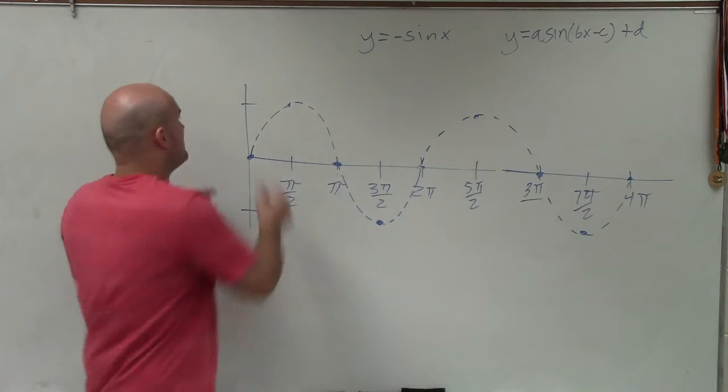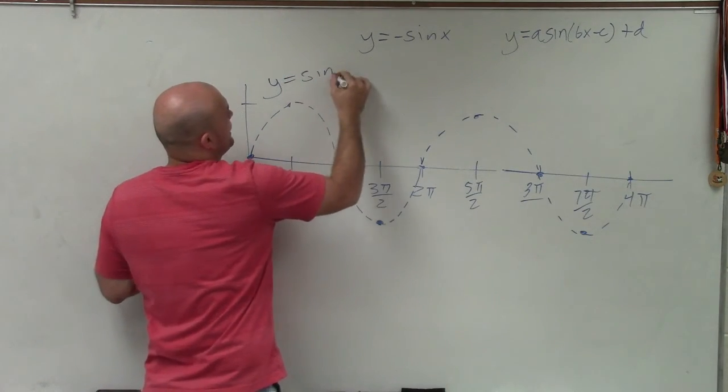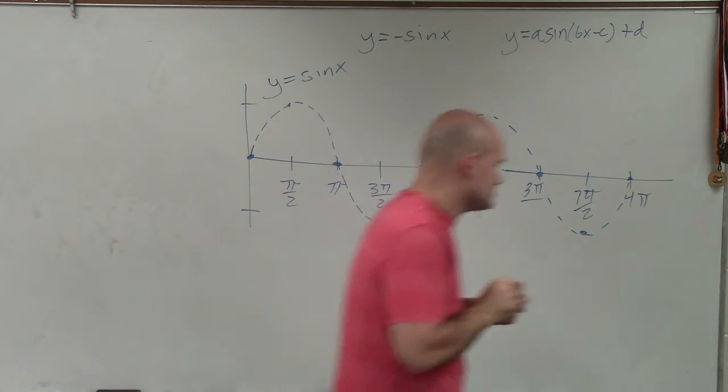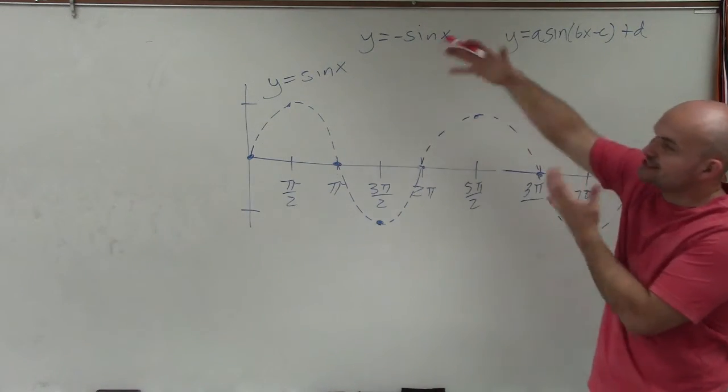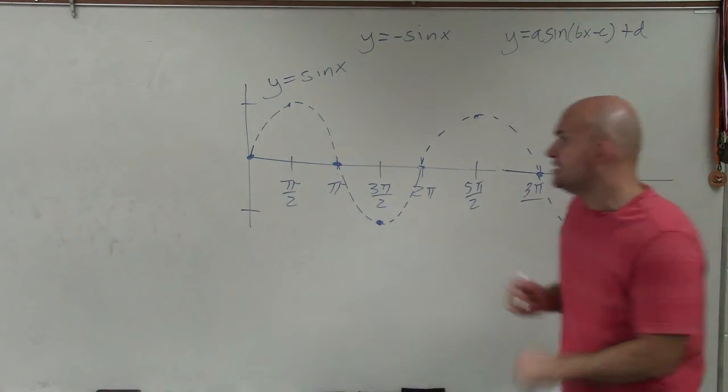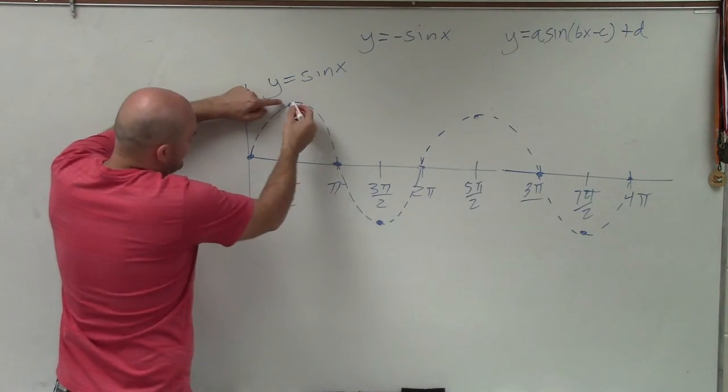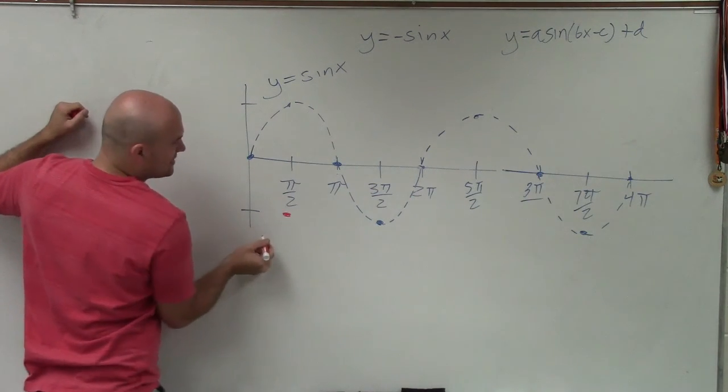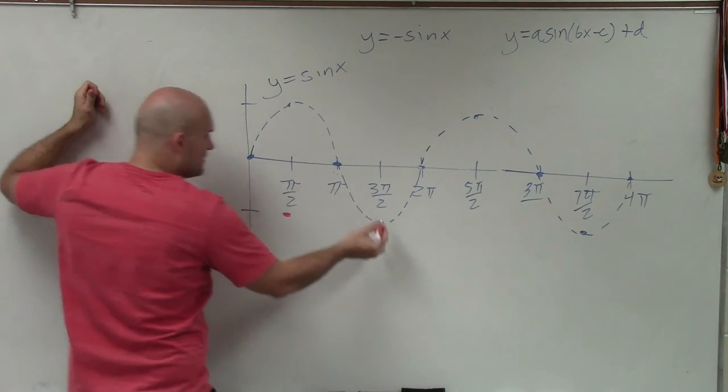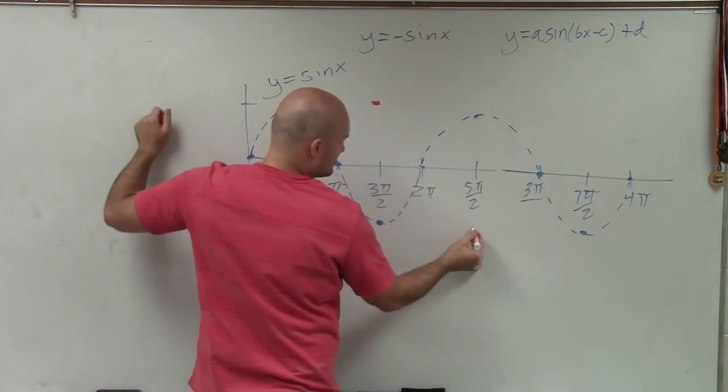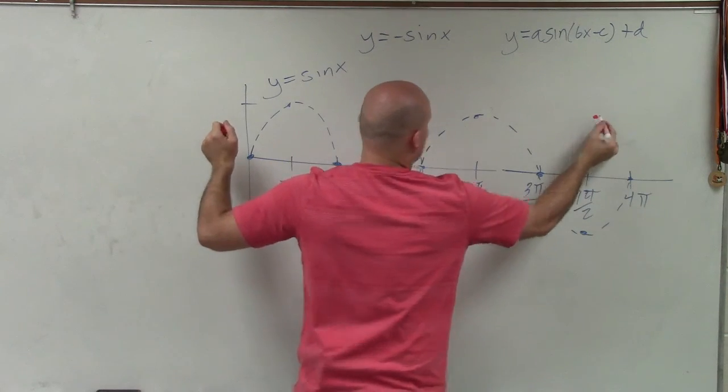So that is the parent graph, y equals sine of x. But we need to graph y equals negative sine of x. And all we're doing is just reflecting this graph over the x-axis. So any point that I have above the x-axis is now going to be below the x-axis. I can't reflect the point that's on the axis, so that's going to remain the same. This point now gets reflected up here. This goes down here. This point goes up here.